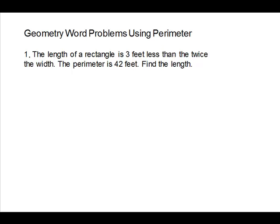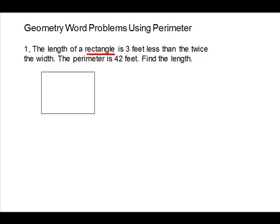We're going to look at a perimeter word problem. The first thing you want to notice is your shape, and we are going to work with a rectangle. So we'll make a picture. The dimensions on a rectangle are length and width, so we'll write those down. We don't want to abbreviate because we don't want to mix our abbreviation up with our variable.